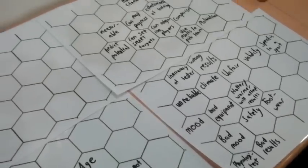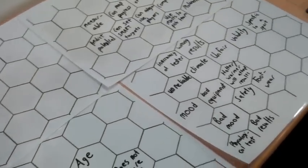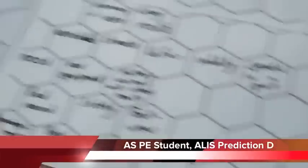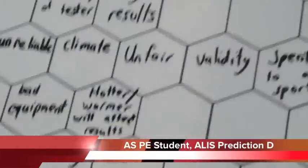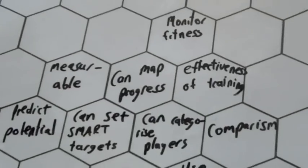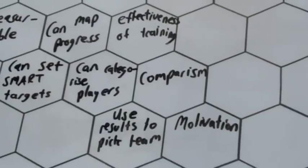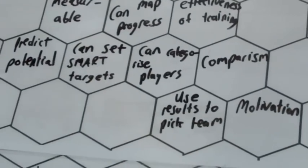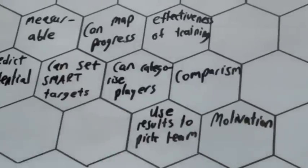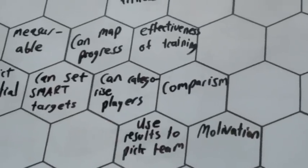Your essay question was to discuss the impact of fitness testing on elite level sport. Can you explain your plan for your essay question here? I split up the parts of the essay into three sections. These are mainly the advantages of fitness testing, like you can map progress, categorize players, and set targets to see whether a certain training program is effective or not.